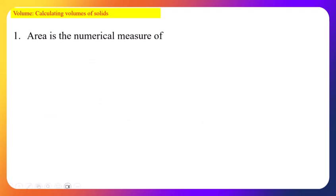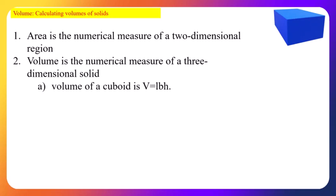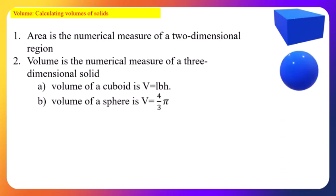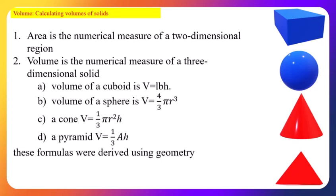We know that area is the numerical measure of a two-dimensional region; similarly, volume is the numerical measure of a three-dimensional solid. For example, the volume of a cuboid is l × b × h, the volume of a sphere is (4/3)πr³, and the volume of a cone is (1/3)πr²h.